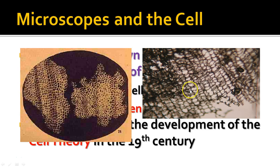Over here we have an actual modern day photograph of what cork cells look like. You can see from the detail of what he showed, he saw quite a bit with his primitive microscope. The big thing is that the cells he looked at were dead and all he saw were cell walls from cork, which comes from the inside of an oak tree. He called them cells because he thought they looked like tiny little rooms, like the cells in a monastery.